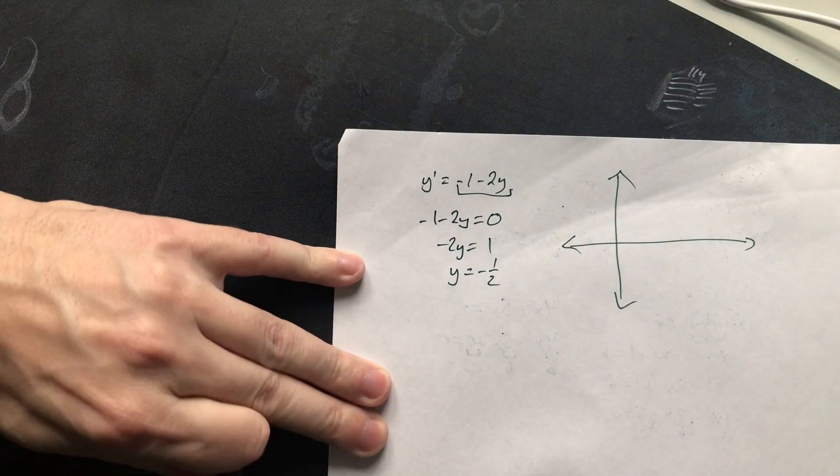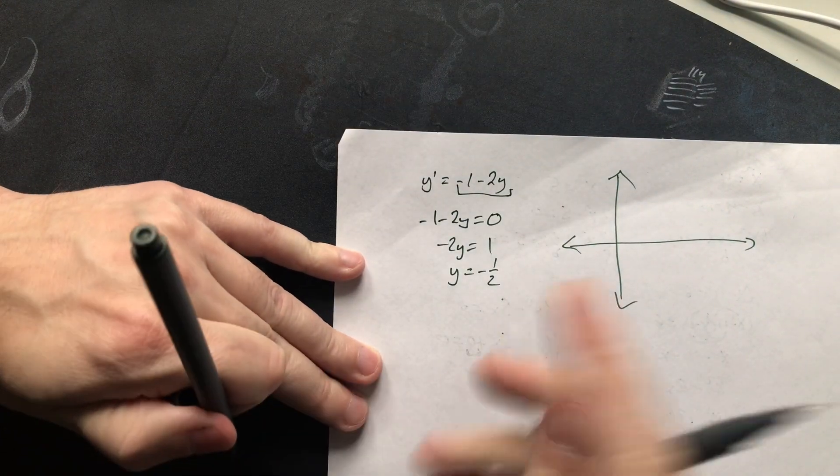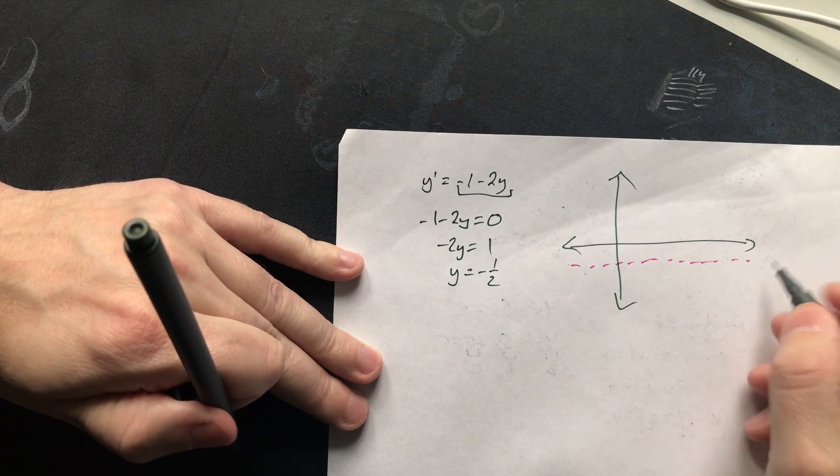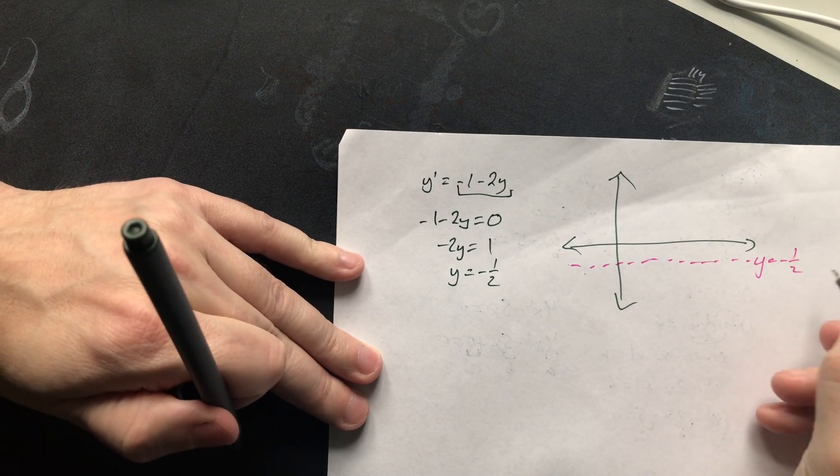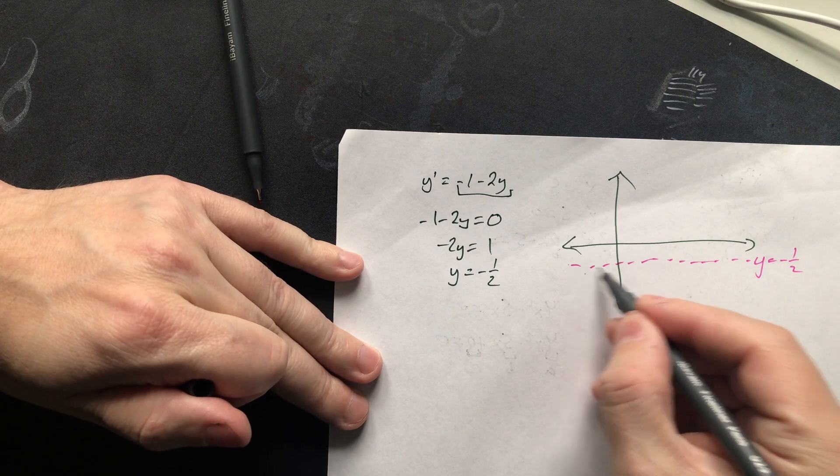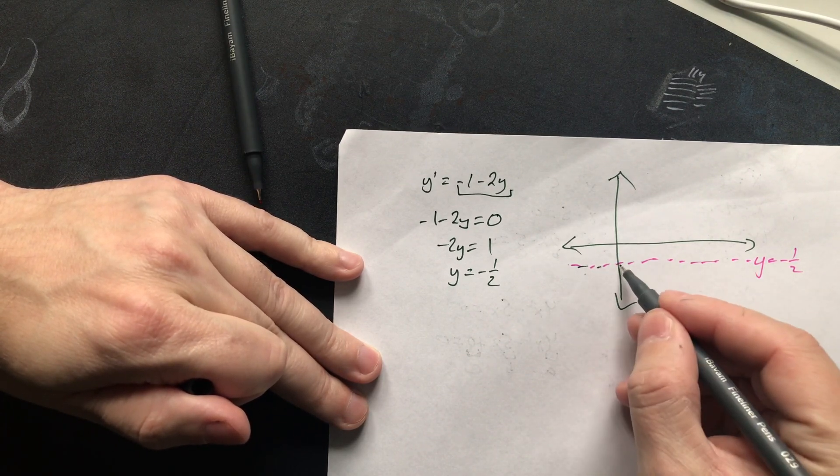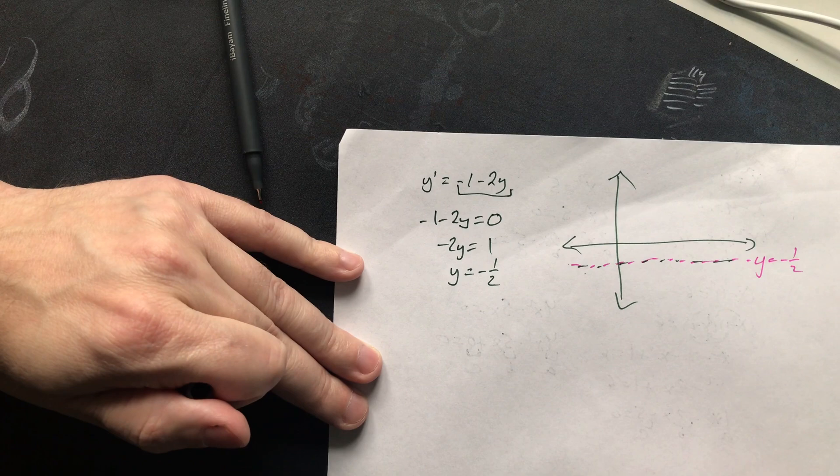So along this line here, y equals negative 1 half, we have a slope of 0. So say this is y equals negative 1 half. That means the slope is 0, so you can indicate that with little lineal segments that look pretty much horizontal.